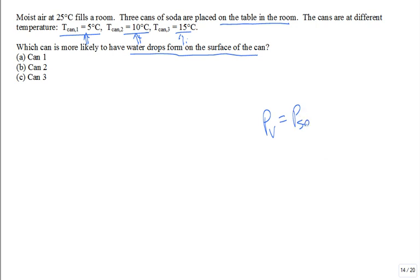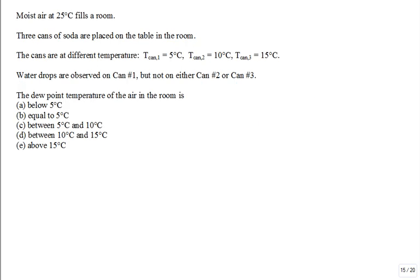Here's a problem. Moist air at 25 degrees C fills a room, like this room. 25 degrees C. Not hot, not cold. Three cans of soda are placed on the table in the room. One, two, three. The cans are at different temperatures. Maybe you got them out of different fridges. One is 5 degrees C. That's the coldest can. The next one's 10 degrees C and the next one's 15 degrees C. All are colder than the air in the room. Which can is more likely to have water drops form on the surface of the can? The colder can.